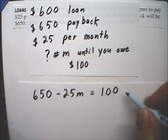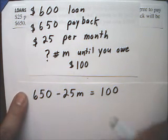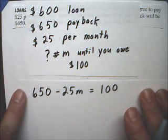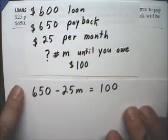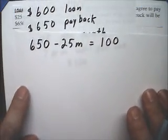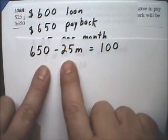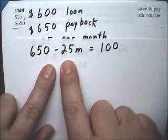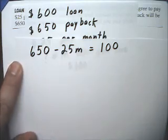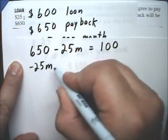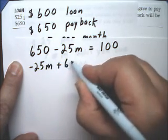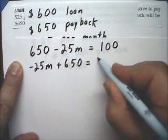Maybe you're interested in this because if you only owe $100, you're just going to pay them the $100 and have it done with. Now we can solve this equation. Just like we did with the last couple, we're used to having the variable as the first term, so let me switch that around: it'll be minus $25m plus $650 equals $100.